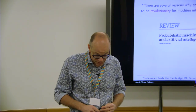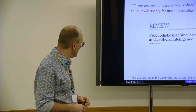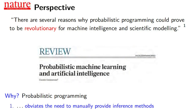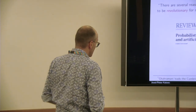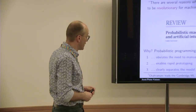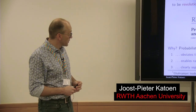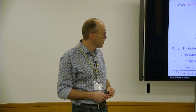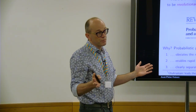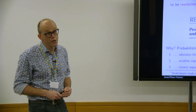I would like to start with a slogan by Zubin Ghahramani in a paper in Nature two years ago. He claims there are several reasons why probabilistic programming could prove to be revolutionary for machine intelligence and scientific modeling. His main argument is that probabilistic programming obviates the need to manually provide inference methods, enables rapid prototyping of models, and gives a clear separation between the model and the inference procedures.